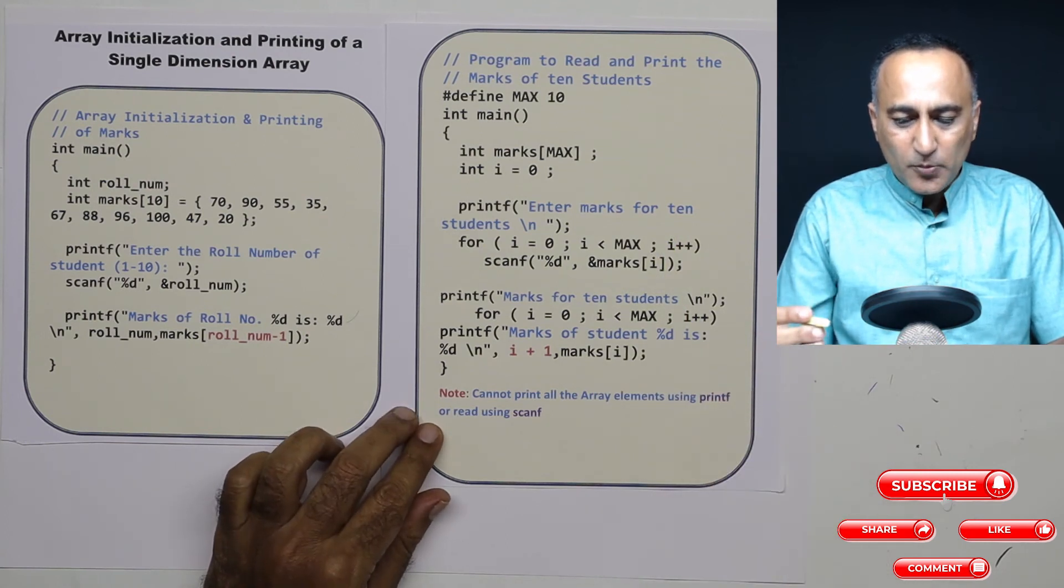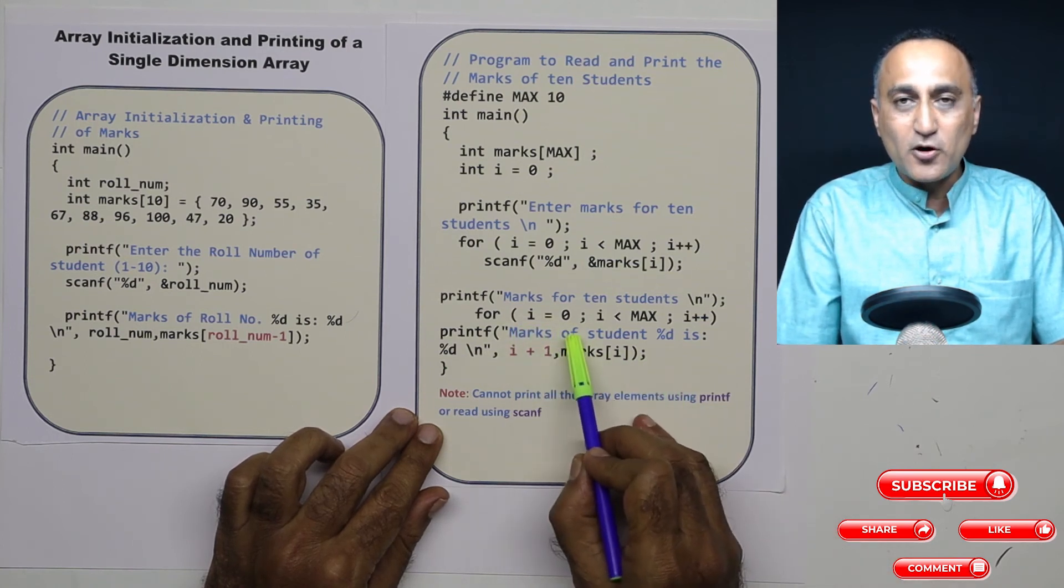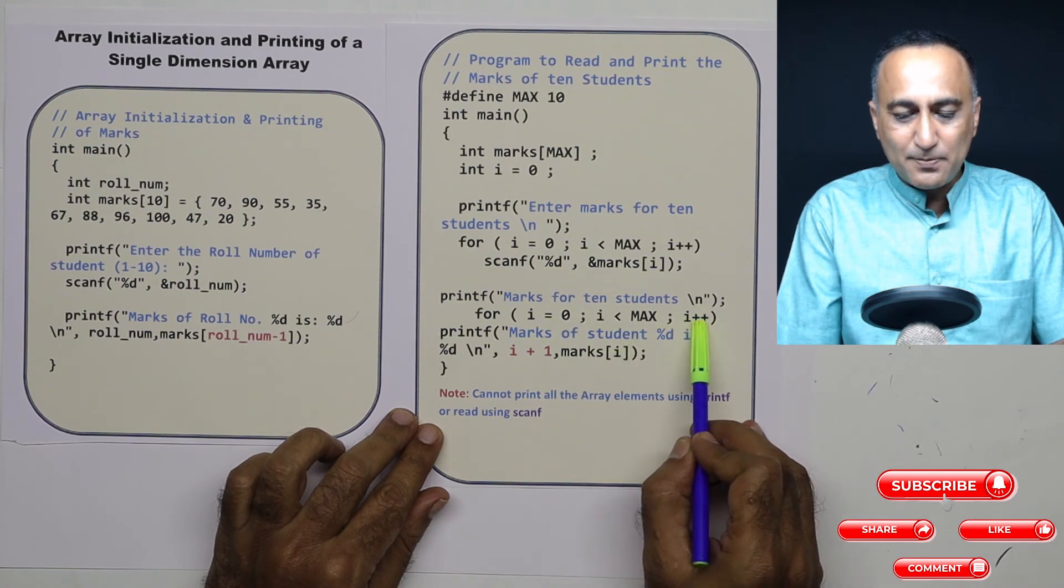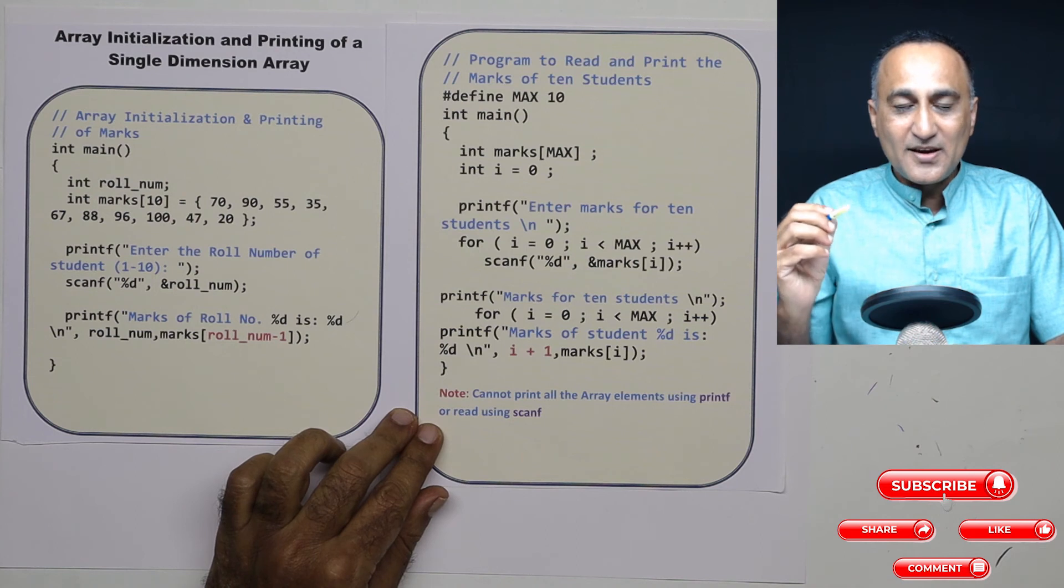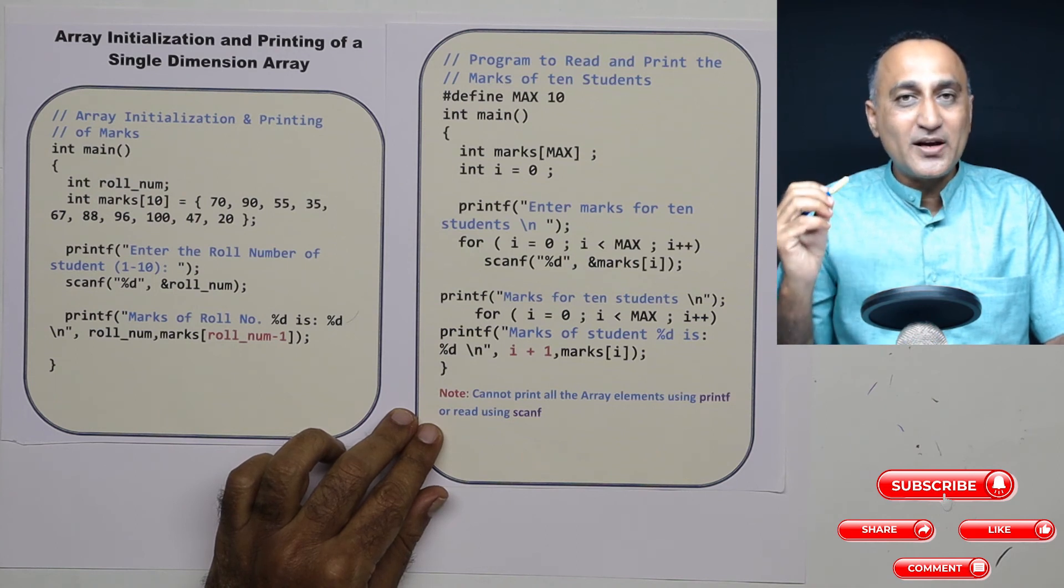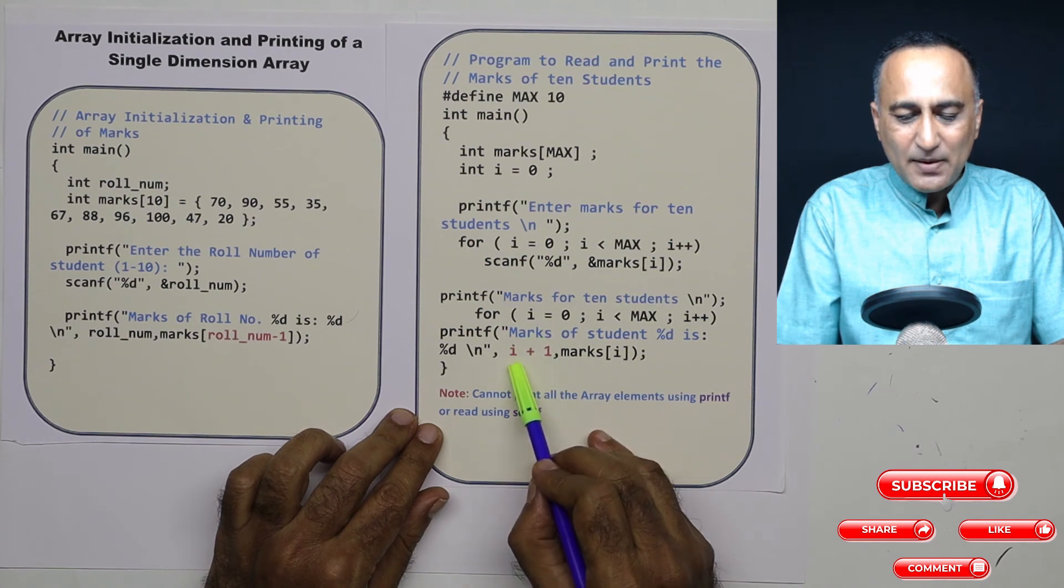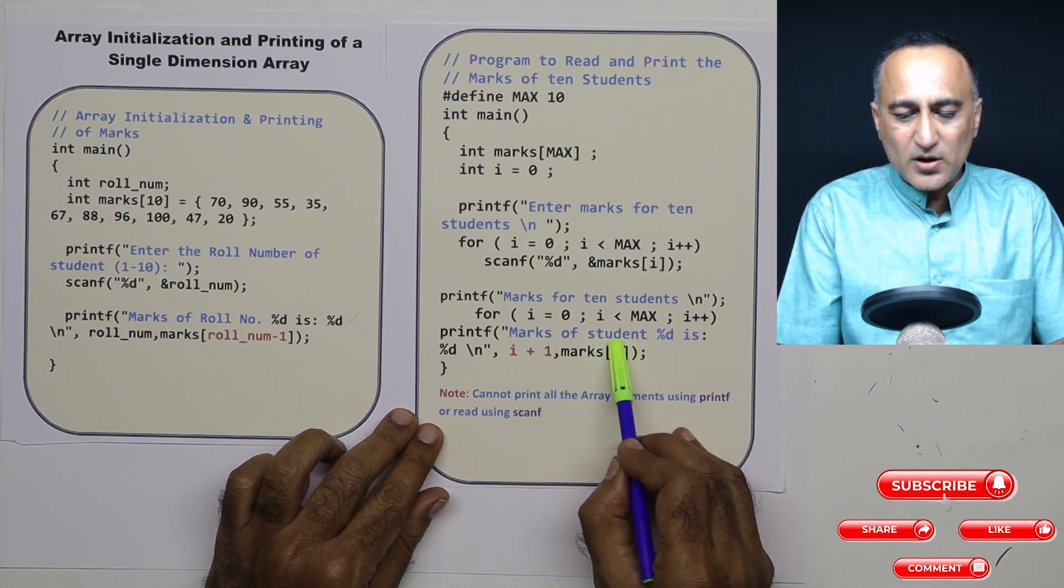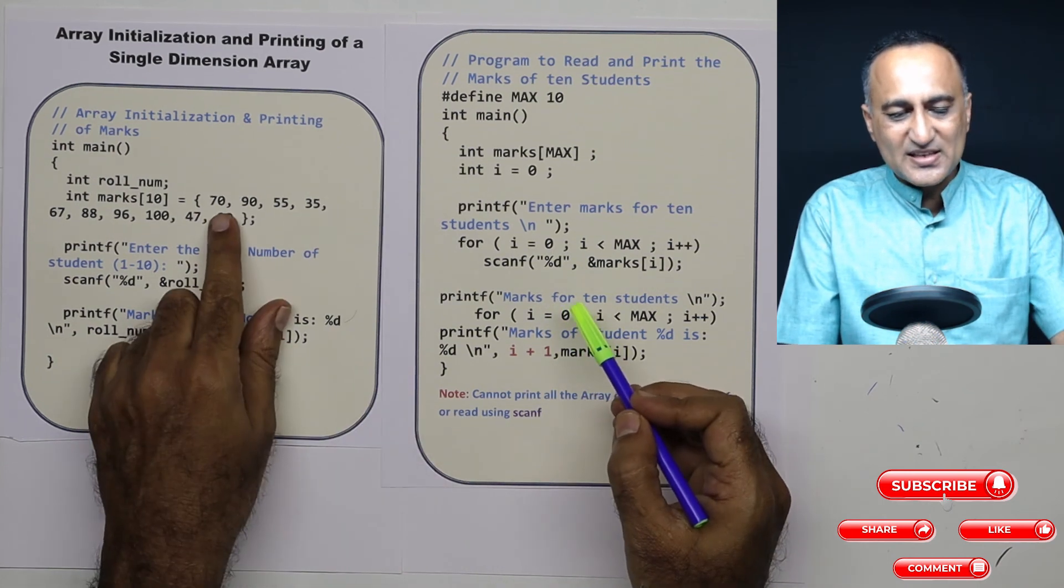Now if I want to print the marks for the 10 students, what I am going to do here is I am going to again use the for loop. I am going to say for i equals 0, i less than MAX, i plus plus. But since I am going to indicate the roll number, if I say somebody's roll number is 0 it will confuse them. So what I am doing is when I am printing I am adding 1 to the subscript. So when i is 0 it will print the marks for roll number 1. Marks of student 1, marks of 0, it's going to print 70.